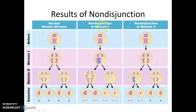Now what if non-disjunction occurs during meiosis one? Both homologous chromosomes representing chromosome 21 will move to one side, and then during meiosis two the sister chromatids of those homologous chromosomes separate — but we create gametes that contain two copies of chromosome 21. If this gamete is used in a fertilization event with another gamete that has the normal one copy of chromosome 21, we create an offspring with three copies of chromosome 21 — that offspring will develop Down syndrome, which is associated with having three copies of chromosome 21.